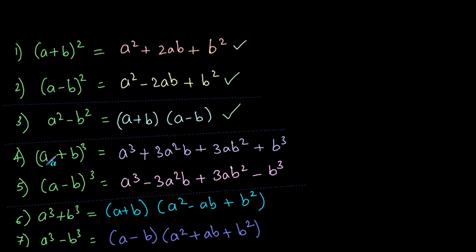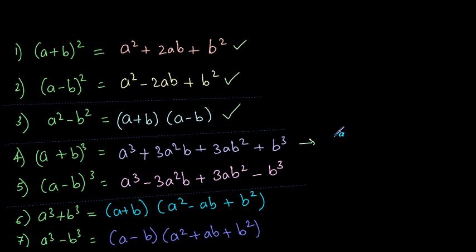The next is (a + b) whole cube, which gives us a cube plus 3a²b plus 3ab² plus b cube. A similar one is (a − b) whole cube, which gives us a cube minus 3a²b plus 3ab² minus b cube. If you remember (a + b) whole cube, for the minus version the signs go: a cube, then minus, then plus, then minus — that's the way to remember these two formulas. For example, 53 cube can be broken down into (50 + 3) whole cube and solved using this formula.